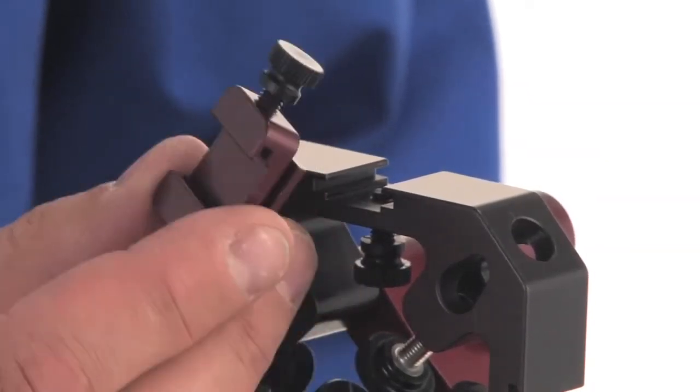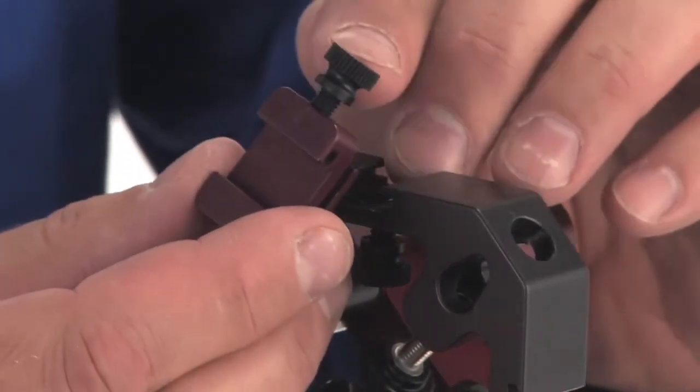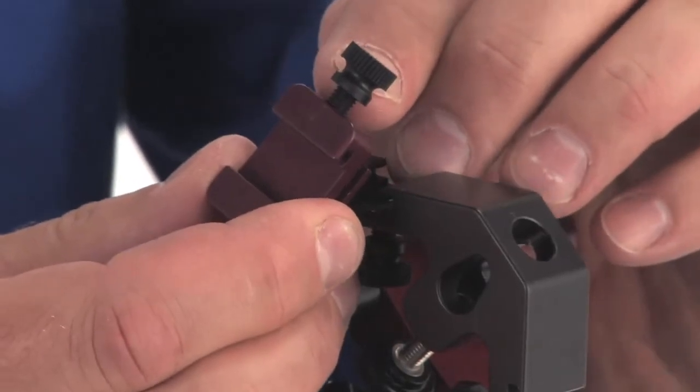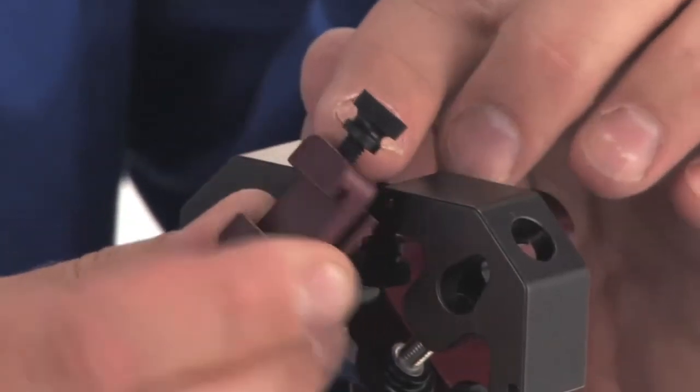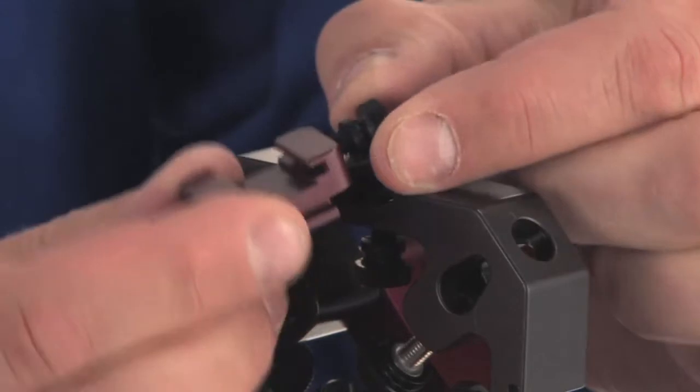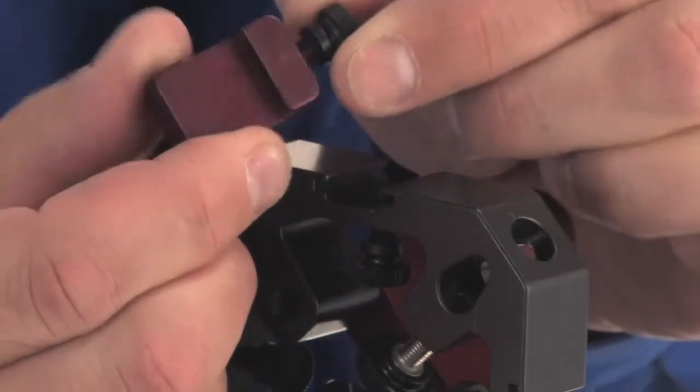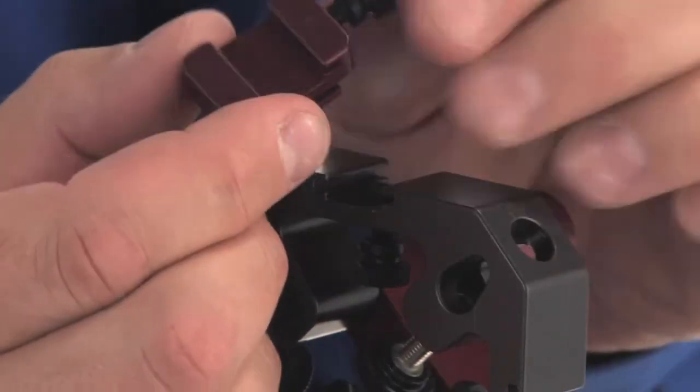After you get your 90 degree mount out of the package, make sure you screw in the nylon locking bolt into the side of the mount right here. Make sure it's in nice and straight. It'll only turn in so far, but this is what keeps your strobe in place.